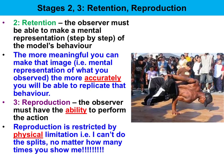Stage 2 is retention. We've got to be able to make a mental, cognitive representation — in terms of the elements of the behaviour, step by step. The more meaningful we can make that cognitive representation, the more accurately we'll be able to reproduce it when required.